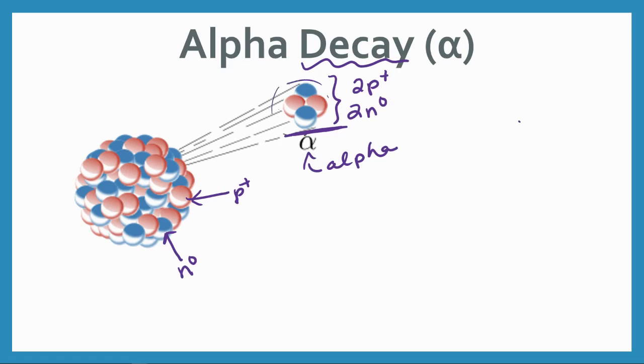So originally, this particle was part of the nucleus, but that was not a good ratio of protons to neutrons. So it threw some of the particles out.